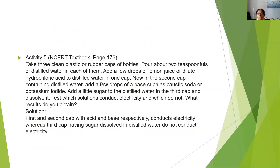Now let's discuss some activities from the NCERT textbook, page 176. We take three clean plastic or rubber caps from used bottles and pour about two teaspoons of distilled water in each. To the first cap, add a few drops of lemon juice or dilute hydrochloric acid. To the second cap, add a few drops of caustic soda or potassium iodide. To the third cap, add some sugar dissolved in water. Then test these three solutions to find which conduct electricity and which do not.